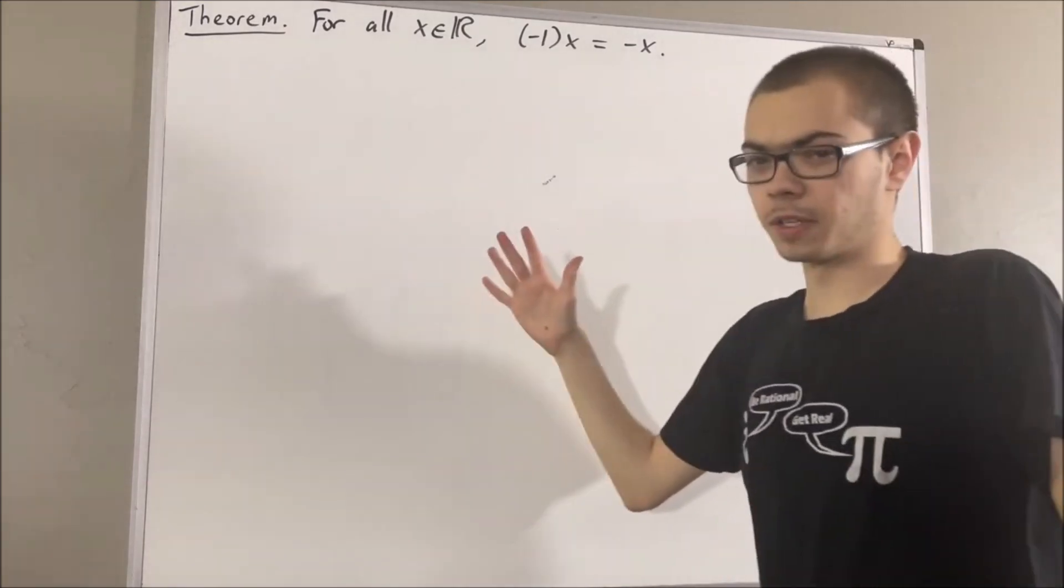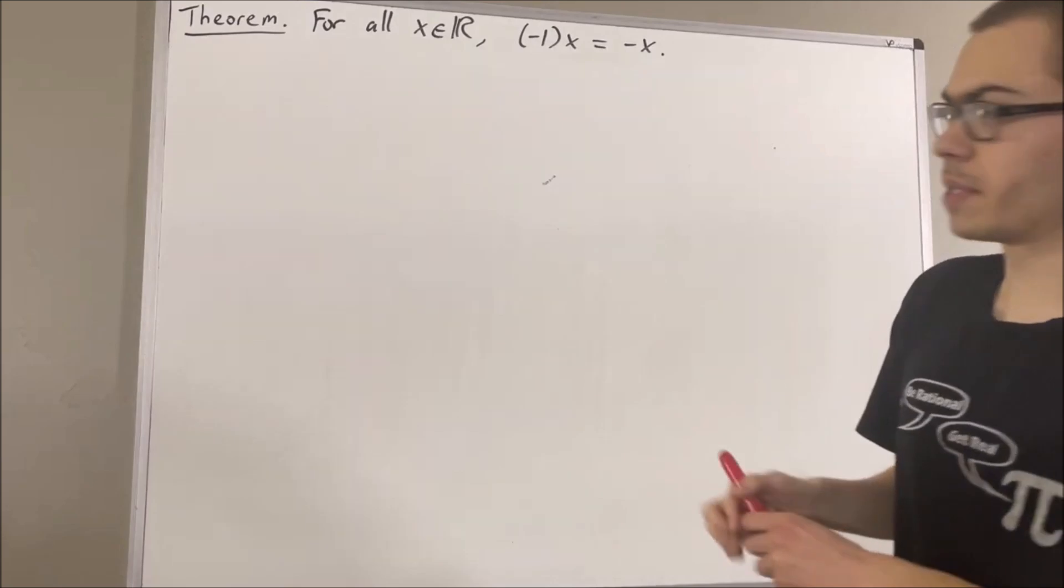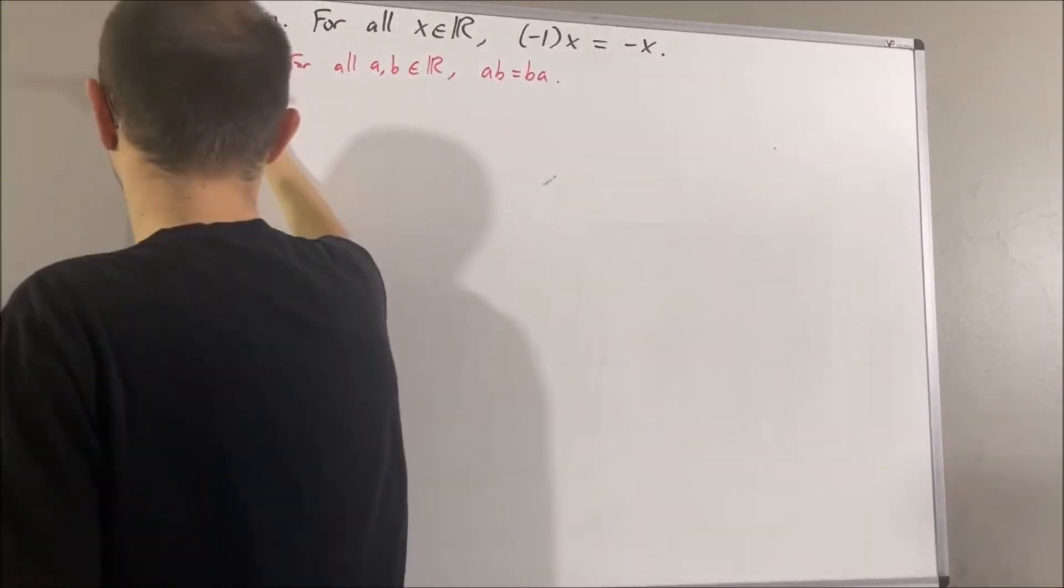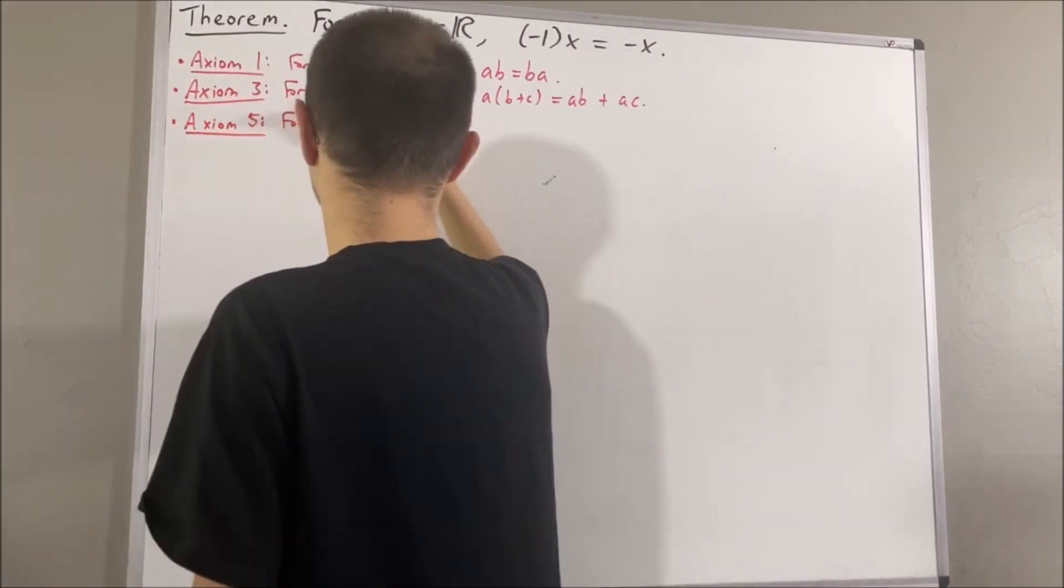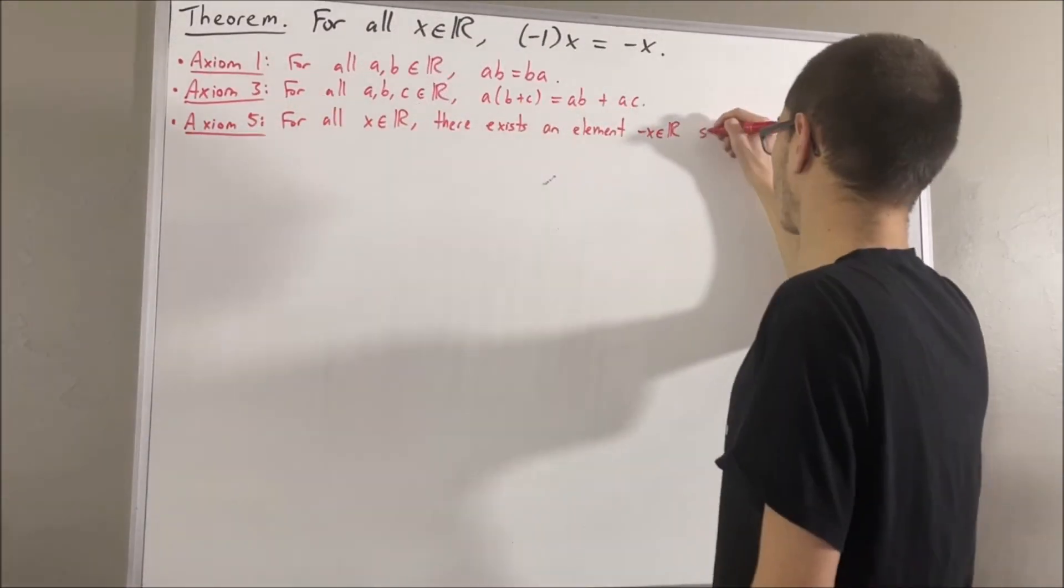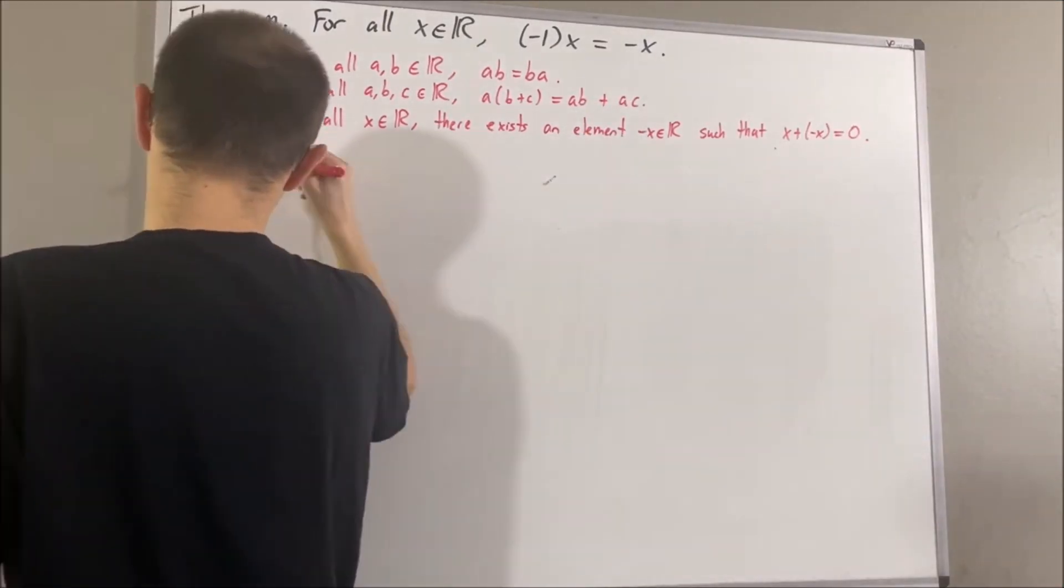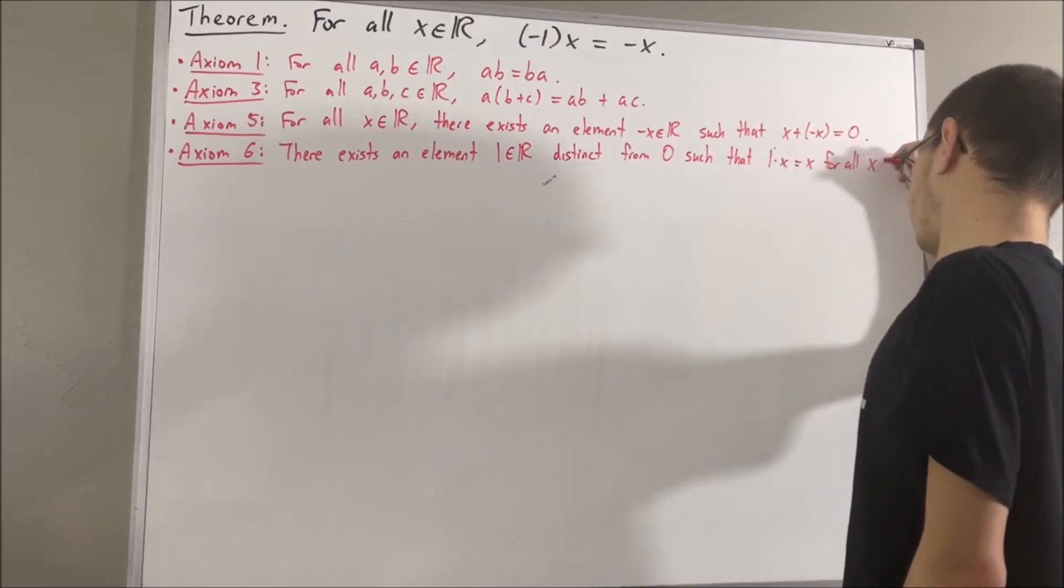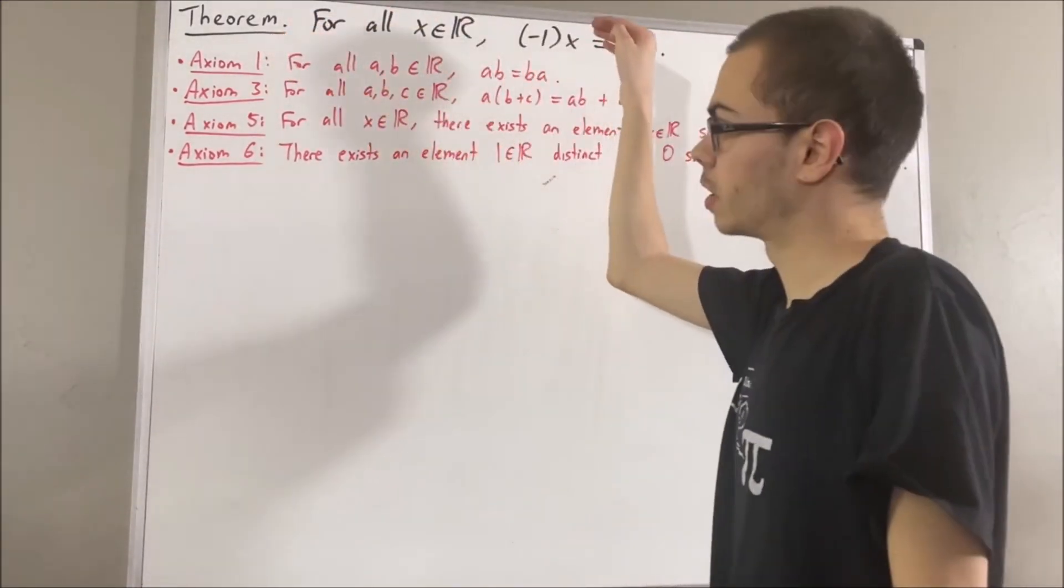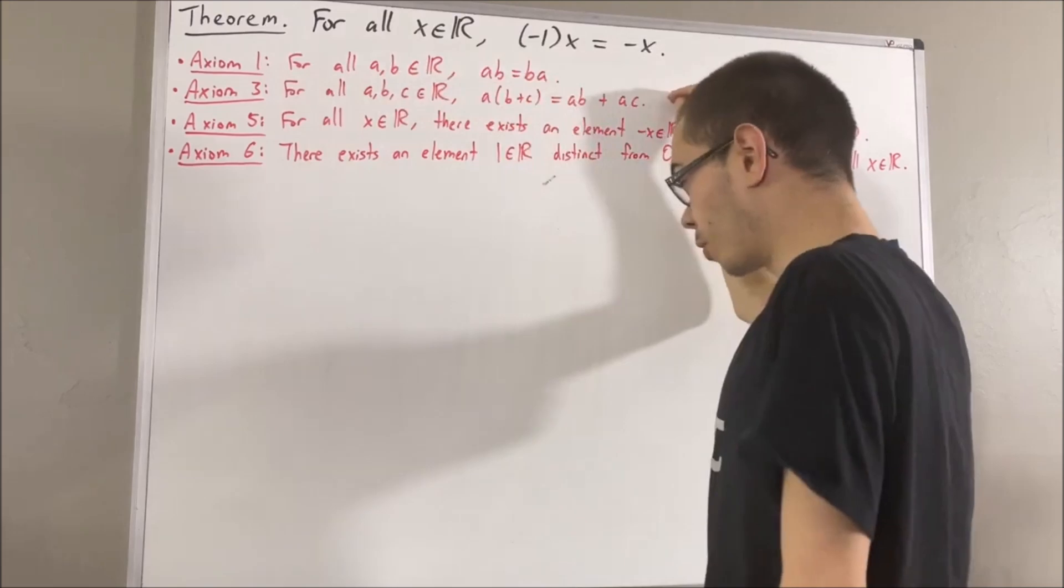Now in this video, we are going to be using the following axioms. Axiom 1 is just the commutative law, axiom 3 is the distributive law,